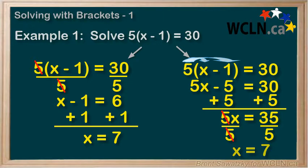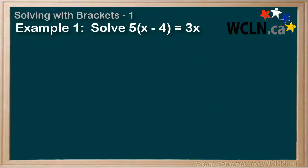Example 2: 5 times (x minus 4) equals 3x. Again, we have brackets. If we try to divide the 5 out this time, we'd notice that 3 is not divisible by 5, so it won't work out that nicely. Therefore, it's best to start with distribution.